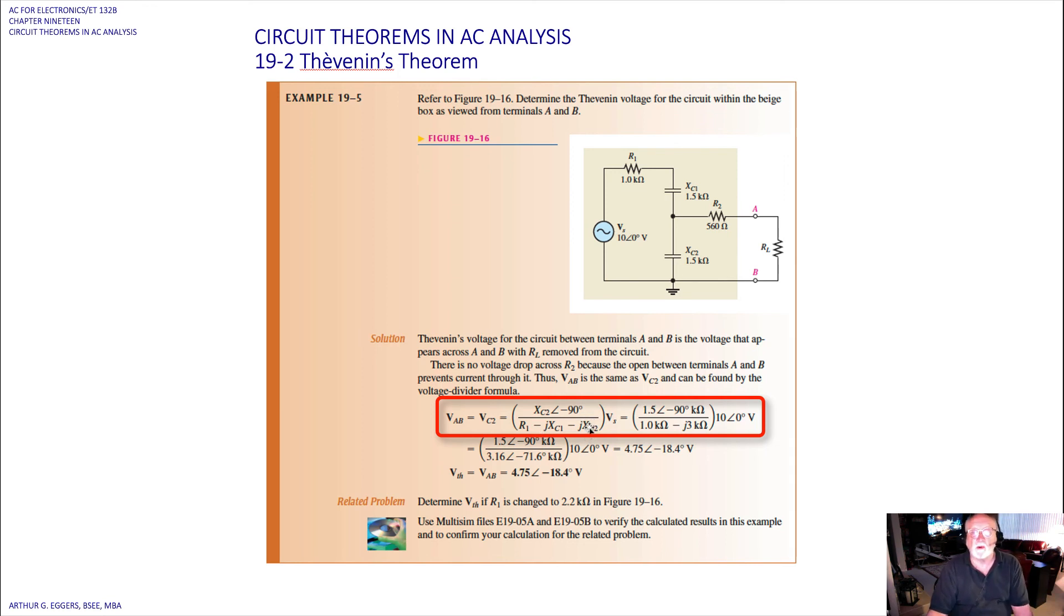Again, we've got a blend of polar and rectangular, so we're going to convert to polar and then we're going to use the rules for polar analysis to calculate the voltage across that capacitor. When we do that, we end up with 3.16∠-61.6° in kilohms. We divide that 3.16 into the 1.5, multiply it times 10, we get 4.75. And when we add 71.6° to the -90°, we get -18.4° in volts.